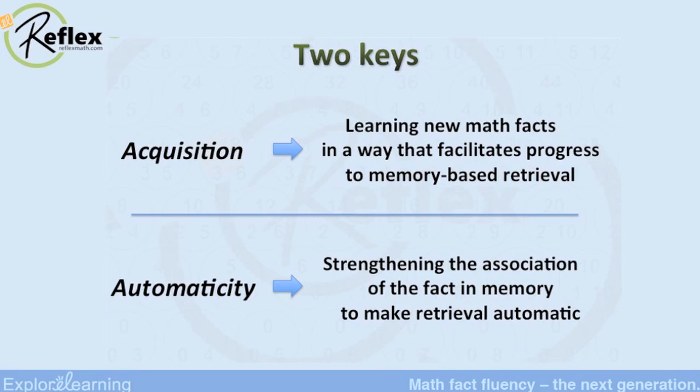Now let's turn our attention to how we accomplish this. We're going to start off by talking about two anchoring principles. If you're comfortable, feel free to take notes, but we do have a white paper and I love answering email questions, so whatever you're more comfortable with. I just don't like seeing people get all stressed out. The two keys are acquisition and automaticity, so let's carefully go over what we mean.